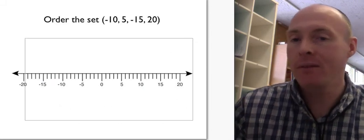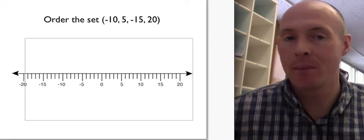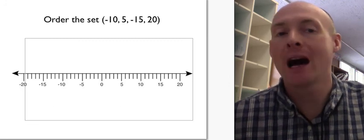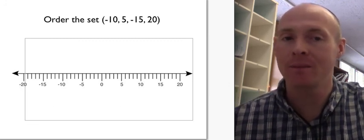Up next, what I have is I gave you a set of four numbers. Negative 10, 5, negative 15, and 20.